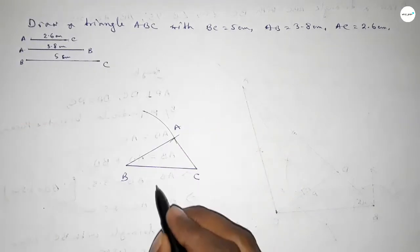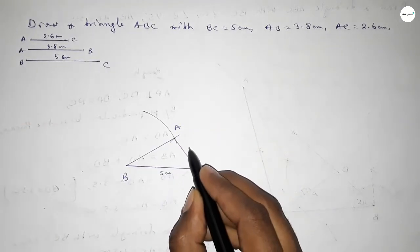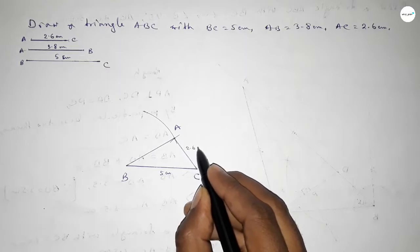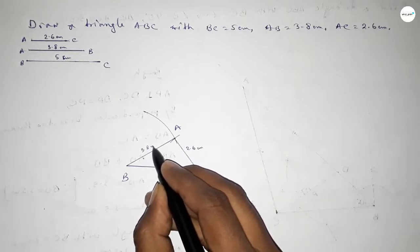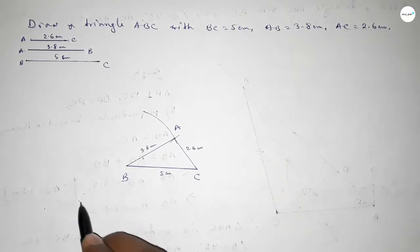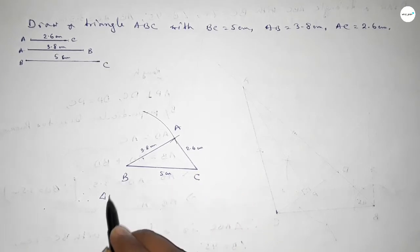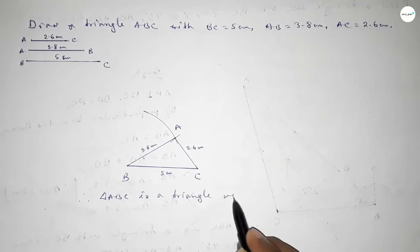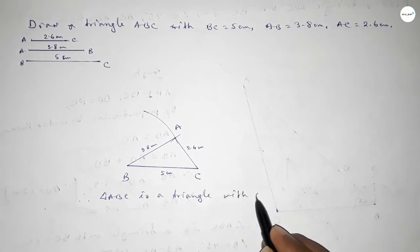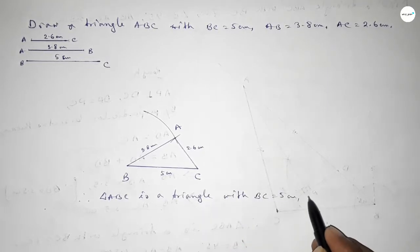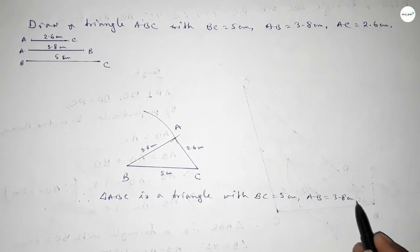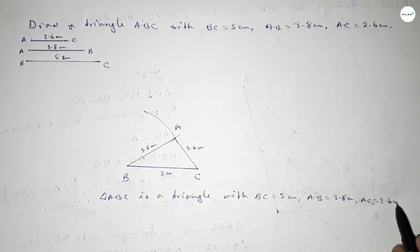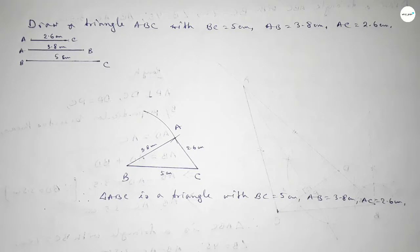Now joining A and C, then joining A and B. So this is 5 centimeter, this one 2.6 centimeter, and this one 3.8 centimeter. Therefore, triangle ABC is complete with BC equal to 5 centimeter, AB equal to 3.8 centimeter, and AC equal to 2.6 centimeter. That's all — thanks for watching. If this video is helpful to you, please share it.